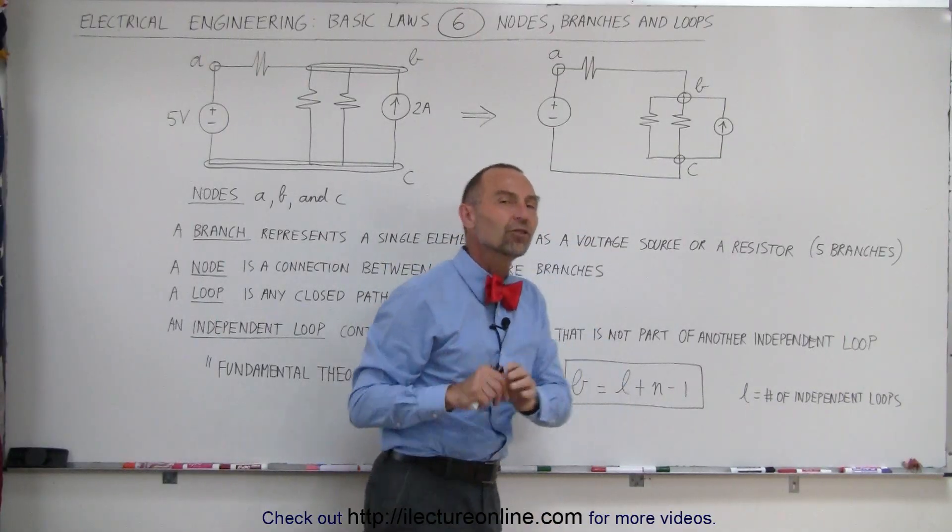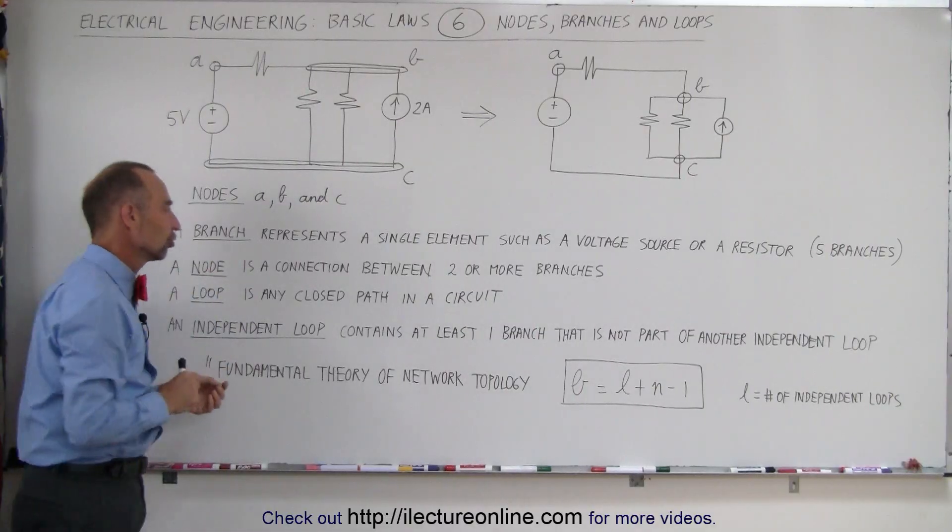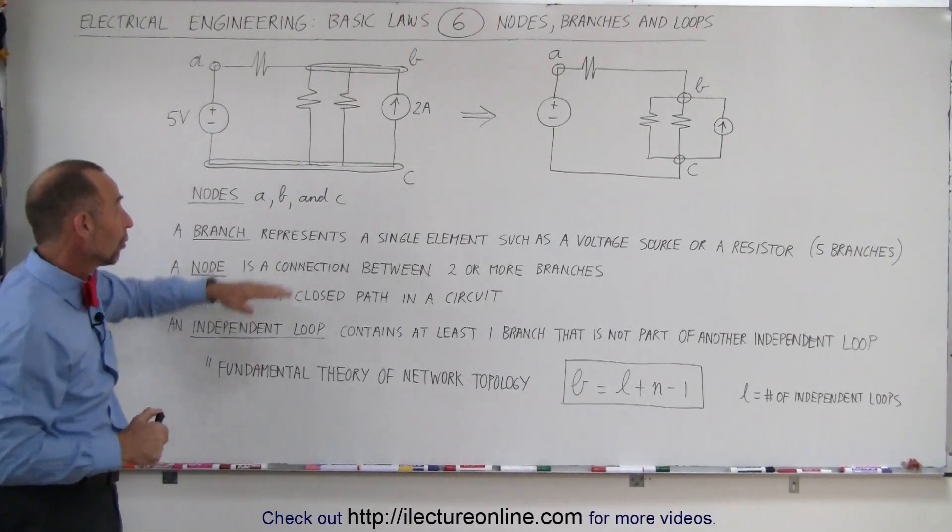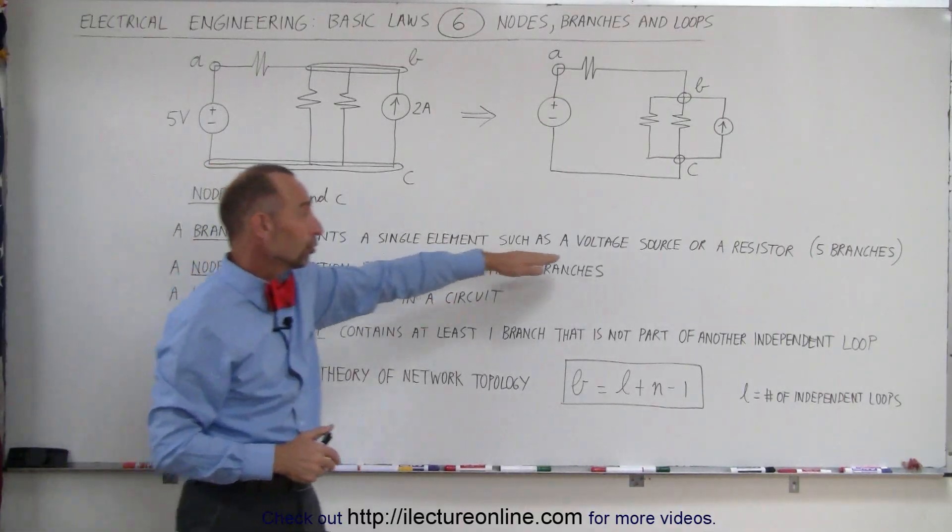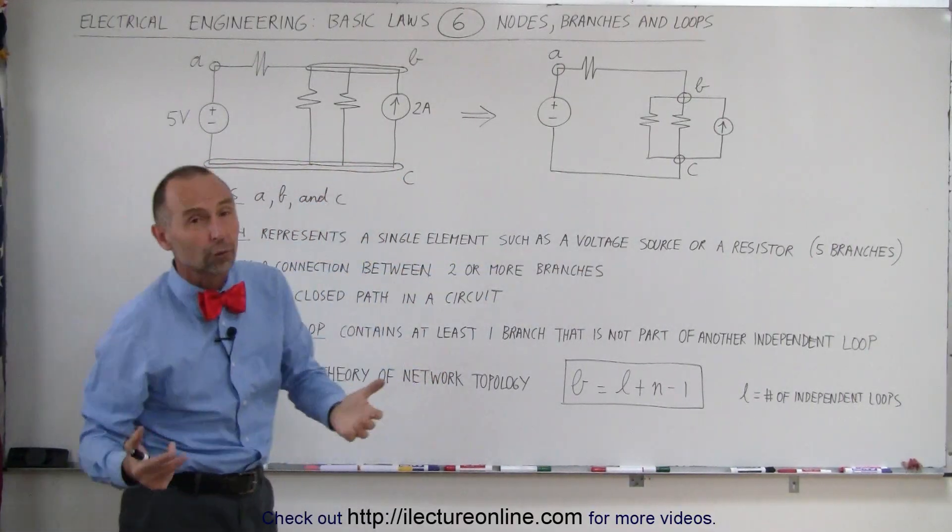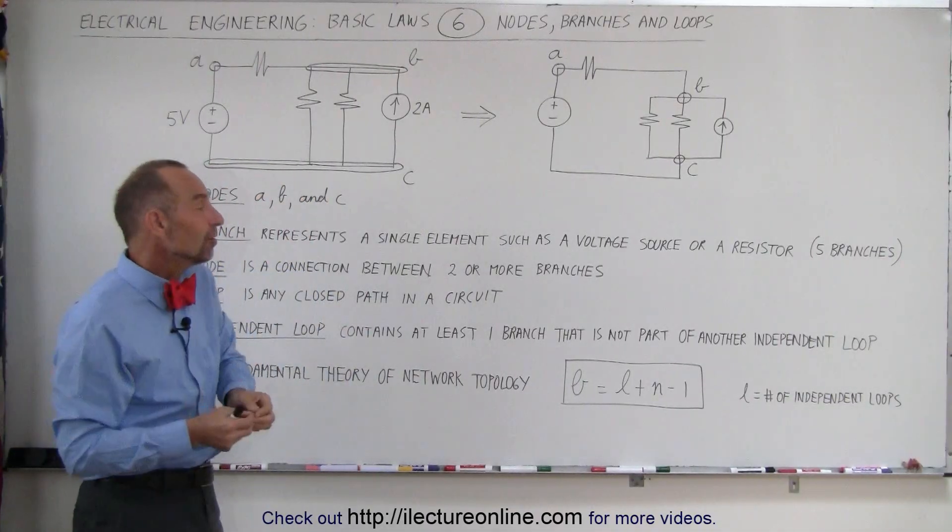We'll get to the definition in just a moment. First let's define a branch. A branch in the circuit represents a single element such as a voltage source or a resistor or a current source or an inductor or a capacitor. It could be any number of things.